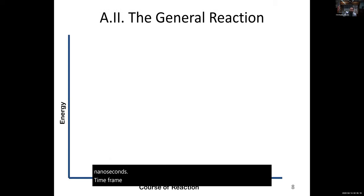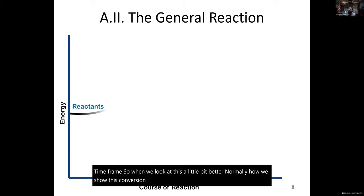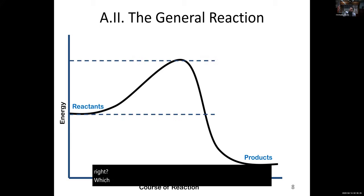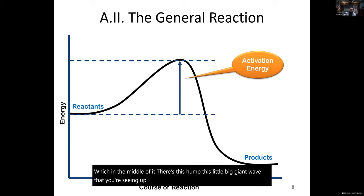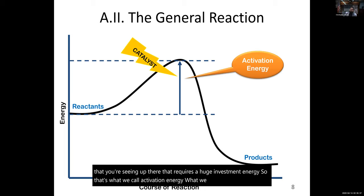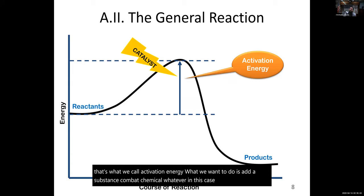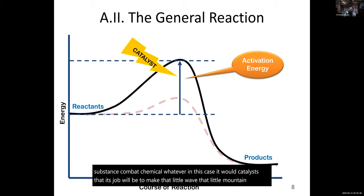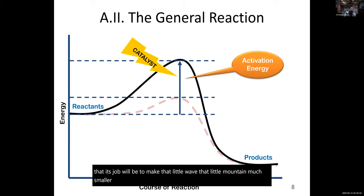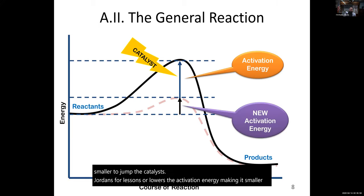Normally, the conversion from reactants into products is shown as a curve with a hump in the middle — a big wave that requires a huge investment of energy. That's what we call activation energy. What we want to do is add a catalyst that makes that little mountain a much smaller hoop to jump. The catalyst shortens or lowers that activation energy, making it smaller and easier to proceed into the next step.